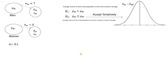Let us see what we know about what happens if we take a sample from the population of men and women. The threshold of the claim in the null hypothesis is that the average income of men can be at most equal to the average income of women.